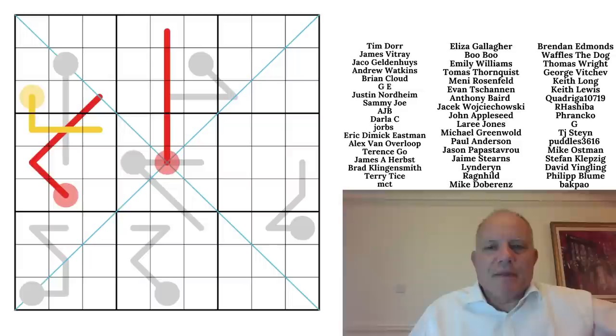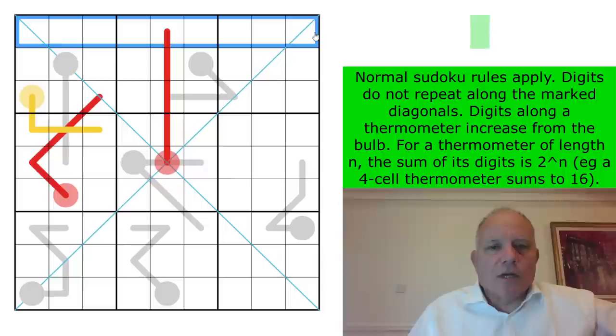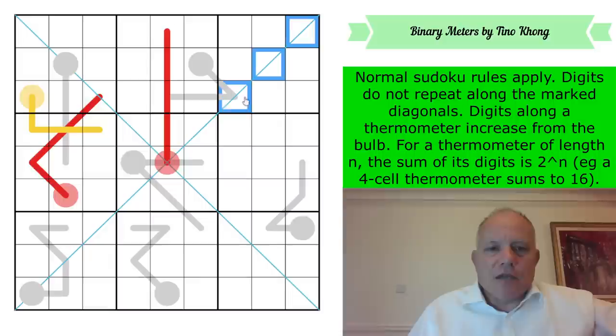So let's hope that Tino is happy with this and his idea is called binary meter. It's really interesting. It's quite new, totally new as an idea, but a very simple rule set and I certainly applaud both of those things. Now, normal Sudoku rules apply in this puzzle. So one to nine in every row, column and three by three box. Straightforward enough.